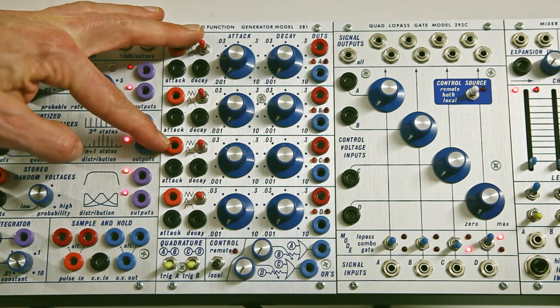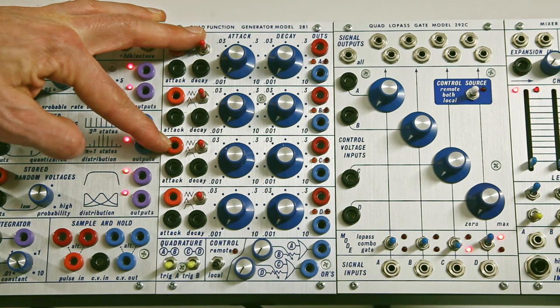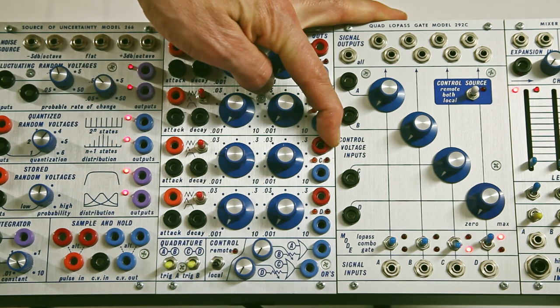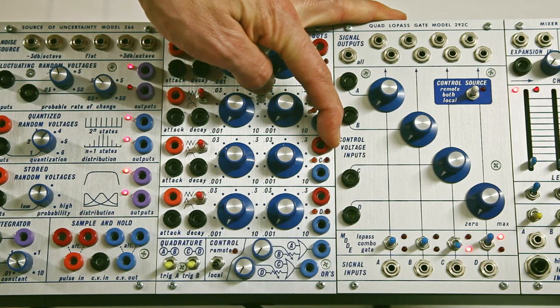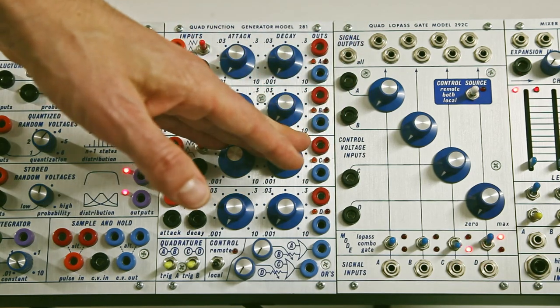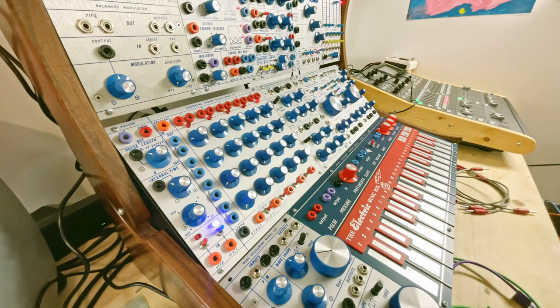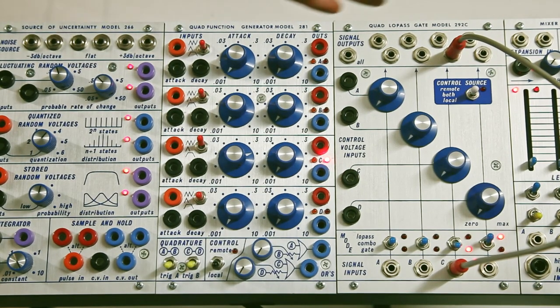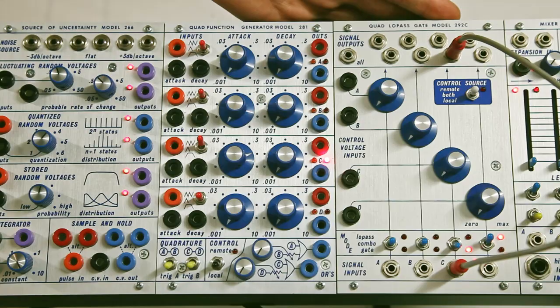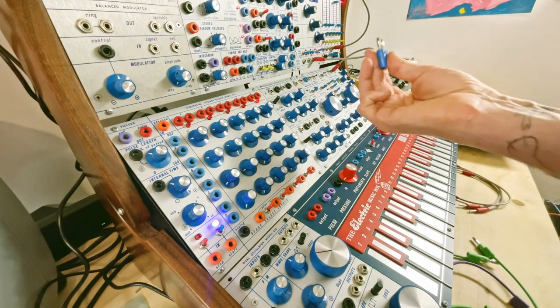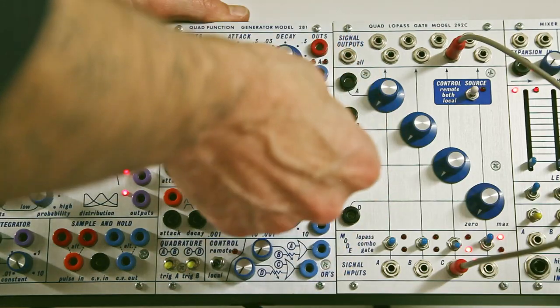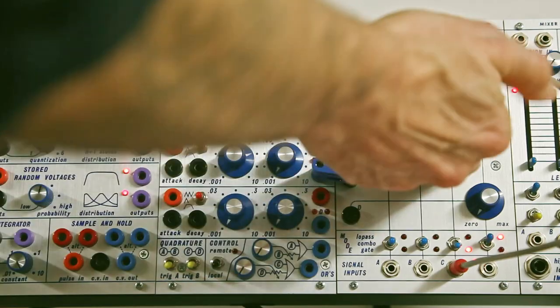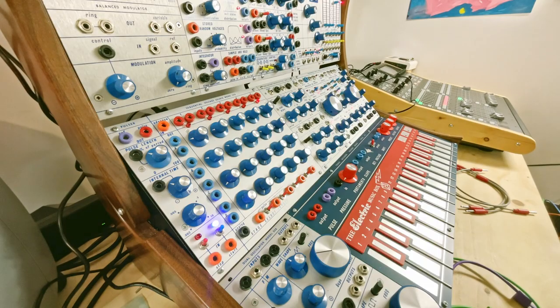Here you get the gate input to trigger the function. And here a gate output that gets high when the function reaches its end of cycle. The 281 has been thought out to work alongside the 292. So you can use shorting bars to connect each function to each CV input of the 292.